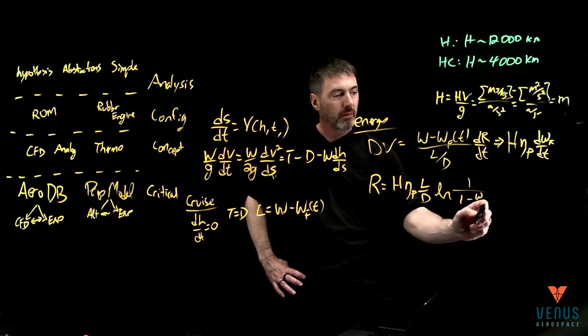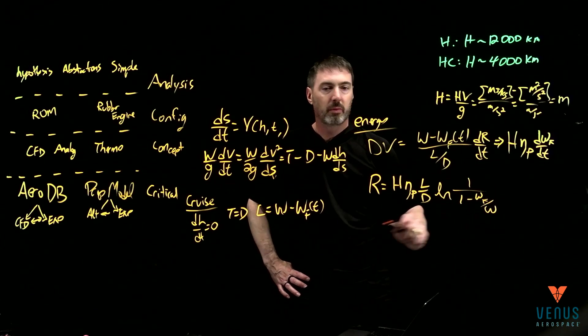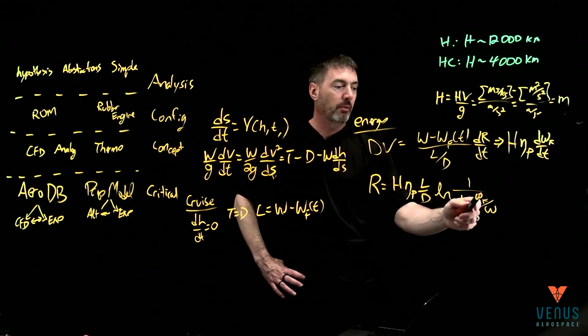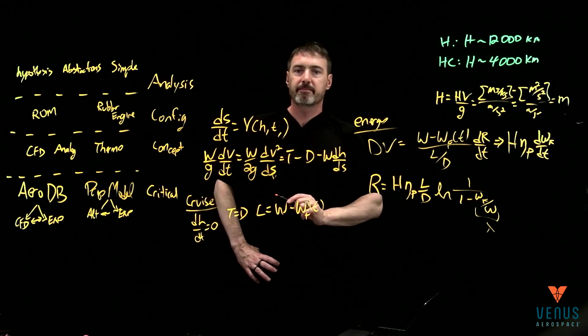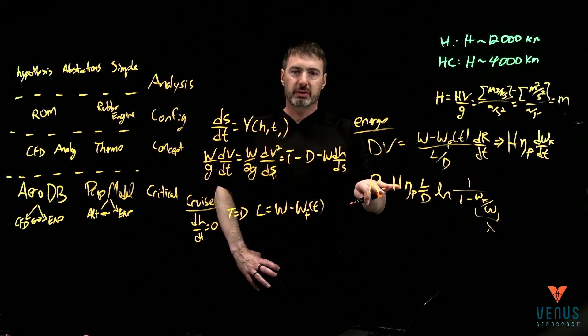You end up getting that the range is equal to H and then eta propulsive, lift to drag, and then you have a natural log of one minus, I'll do it in this form, one minus the weight of fuel over weight.